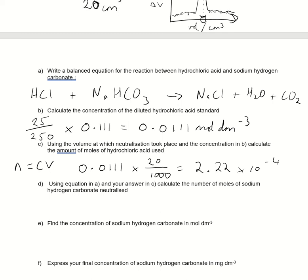Now, using your equation in A, up here, the 1 to 1 ratio, and your answer in C, calculate the number of moles of sodium hydrogen carbonate neutralized. Okay, well I've just said there, 1 to 1 ratio. So for every 1 mole here, we would neutralize 1 of these. So exactly the same.